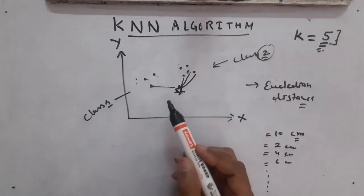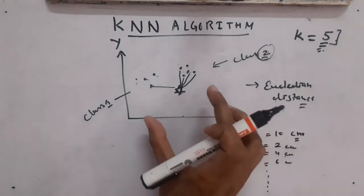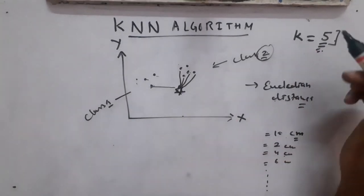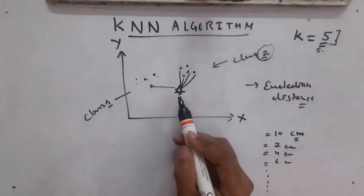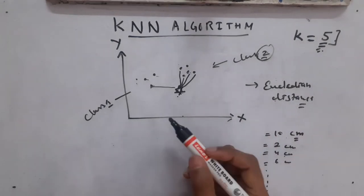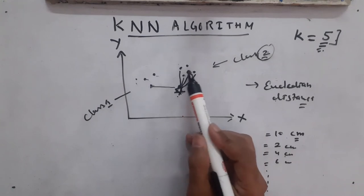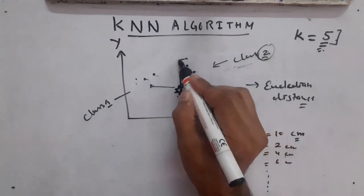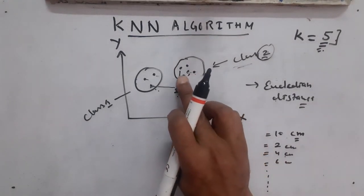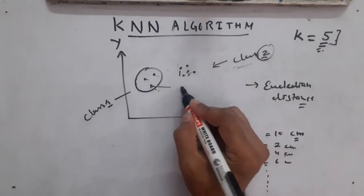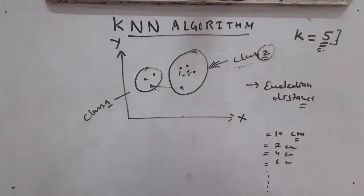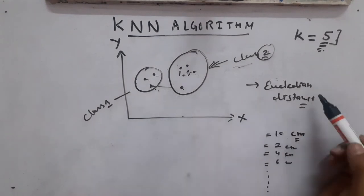Now we picked five data points since we initialized k with five. Out of these five nearest data points, four belong to Class 2 and one belongs to Class 1. Since the majority — four out of five — belongs to Class 2, this new point should also belong to Class 2. So this point will be assigned to Class 2. That's how KNN works.